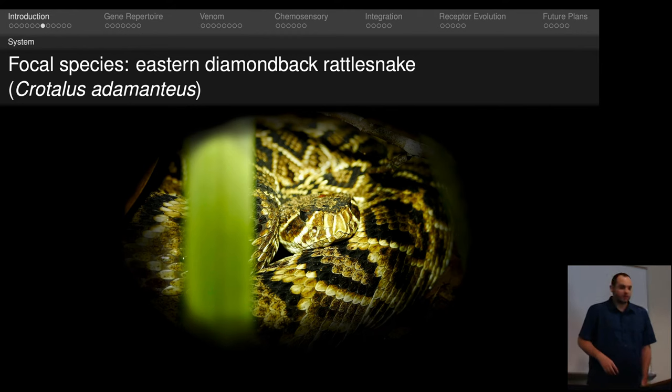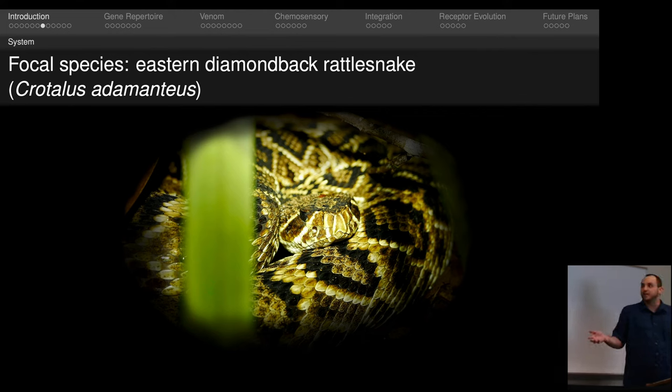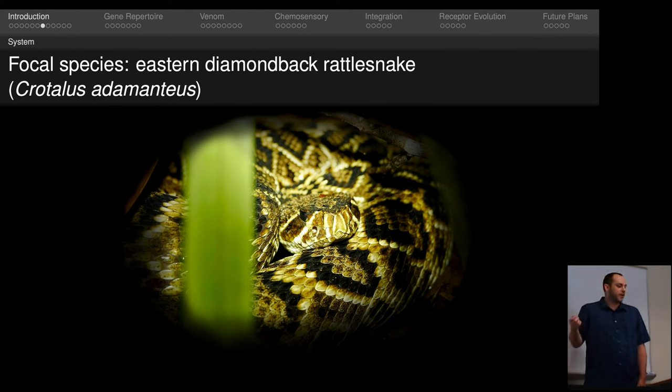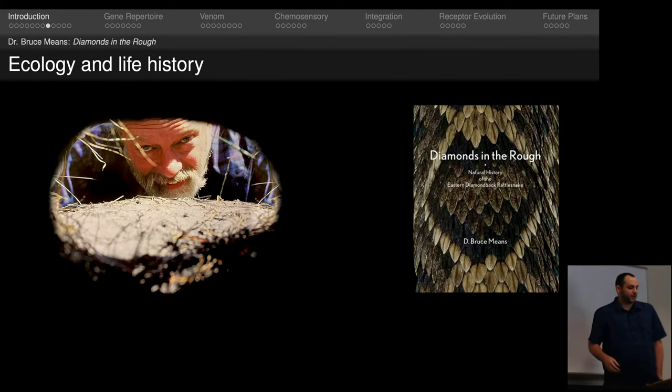So for the bulk of my research, my focal species was the eastern diamondback rattlesnake, Crotalus adamanteus. They're the largest species of rattlesnake that can get up to two and a half meters large, and they're native to the southeastern United States. As far as their ecology and life history, we could thank our local legend, Dr. Bruce Means, for giving us by far the most complete account of this species with his book, Diamonds in the Rough.